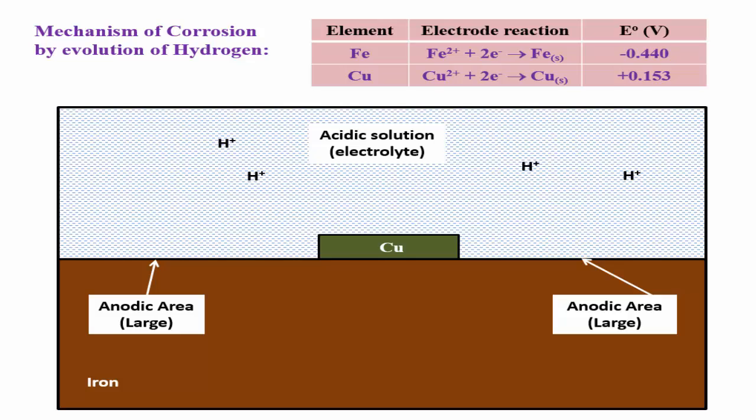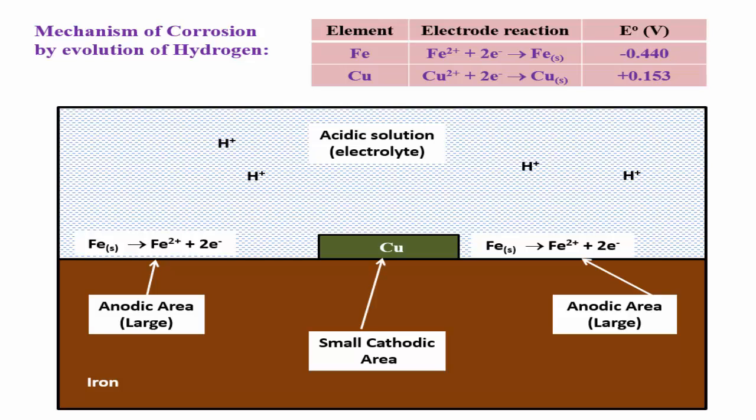Corrosion is an oxidation process. Iron undergoes oxidation to give Fe2+ and two electrons. Copper acts as cathode with a small cathodic area where reduction occurs. Reduction is the consumption of electrons, so electrons flow from anode to cathode, from iron to copper.